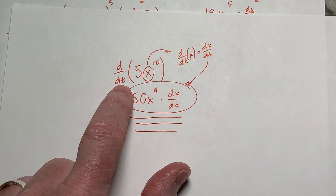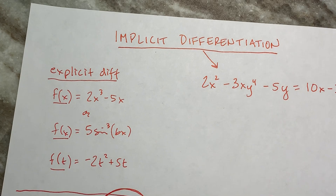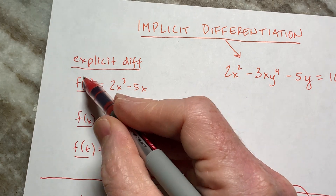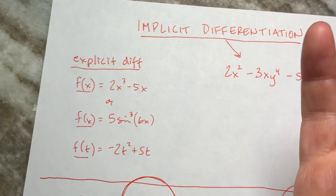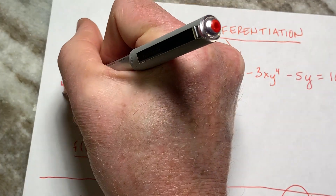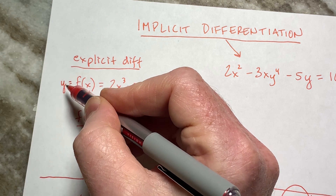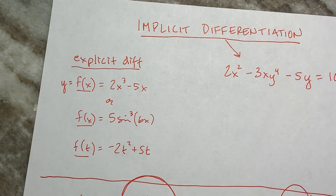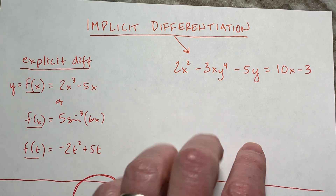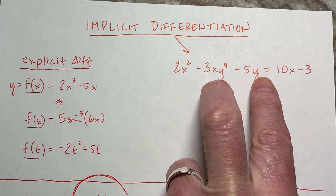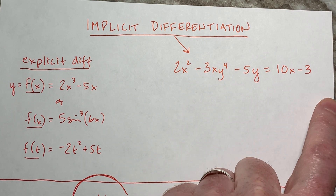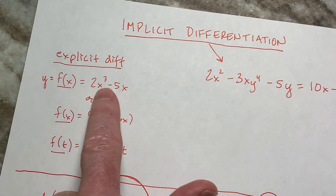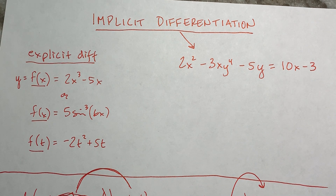Everything we've done has been with respect to X. So when I take the derivative of Y with respect to X, I get DY/DX. Think about it — if that's a Y and I take the derivative, I get 1 times DY/DX, which is why I've just been writing DY/DX or F prime or Y prime. But now when we move into implicit equations, I can't just write Y prime because I can't solve for Y when there are Y and Y to the 4th terms mixed together. Implicit means having Y on both sides, not explicitly written in terms of one other variable.